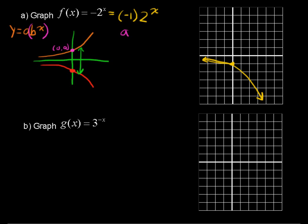Okay, let's talk about the other example. Graph g of x equals 3 to the negative x. I'm just going to say right away that that equals 1 over 3 to the positive x. And that is when our base is something between 0 and 1.